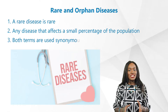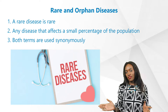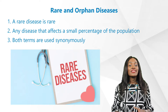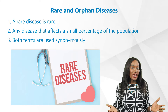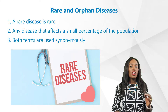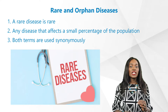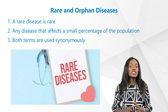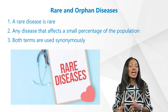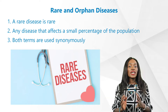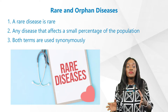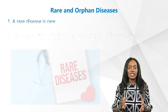We'll start with the definitions for the terms rare or orphan. A rare disease, like the name suggests, is rare and refers to any disease that affects a small percentage of the population, while an orphan disease often refers to diseases that are rare and have been neglected due to lack of a market large enough to get support or resources in developing its treatments, meaning both terms are used interchangeably.